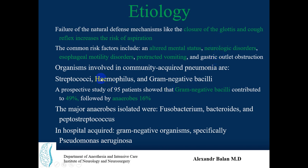Regarding organisms involved: in community-acquired pneumonia, the main bacteria are streptococci, Haemophilus, and gram-negative bacilli. A prospective study of 95 patients showed that gram-negative bacilli contributed to 49%, followed by anaerobes — mostly Fusobacterium, Bacteroides, and Peptostreptococcus. In hospital-acquired cases, gram-negative organisms dominate, especially Pseudomonas aeruginosa.